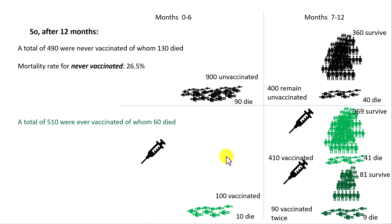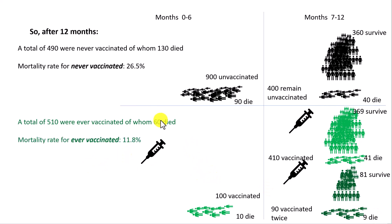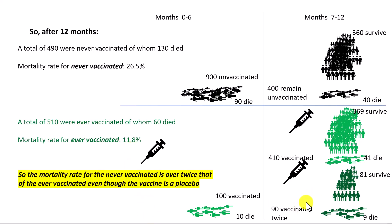What about the ever vaccinated? There are 510 of these: the 10 who died in the first period, plus the 410 who got their first jab and the 90 who got their second jab in the second period — a total of 510. How many died? We've got 10 died here, 41 died here — that's 51 — and 9 of the double jabbed died. So that's a total of 60. The mortality rate for the ever vaccinated is 60 divided by 510, which is 11.8%. So we've got this situation where the mortality rate for the never vaccinated is over twice that of the ever vaccinated, even though the vaccine has no impact whatsoever.